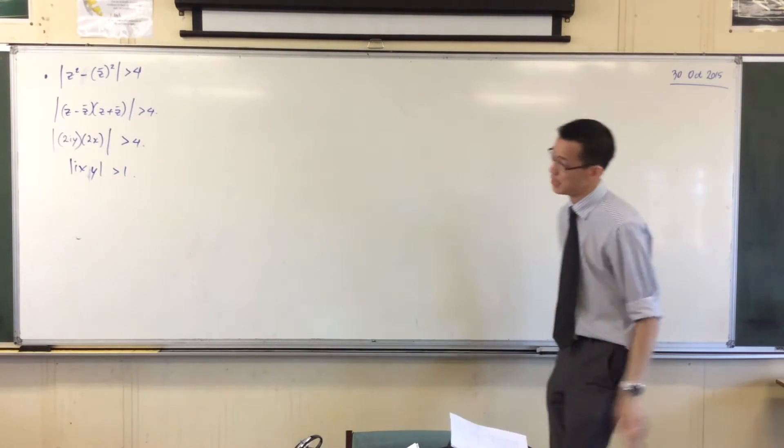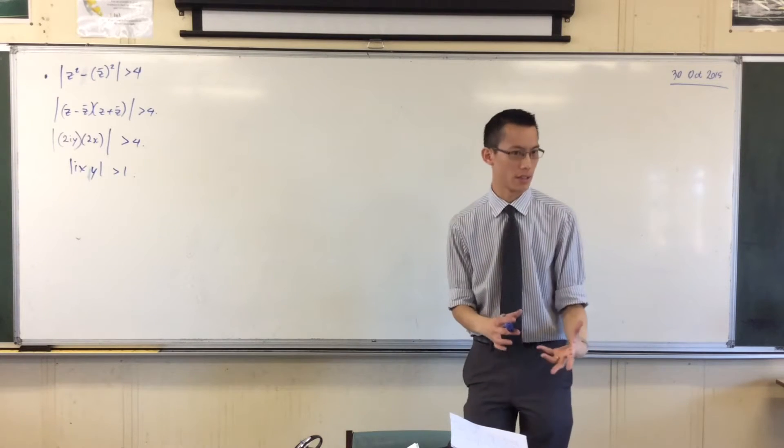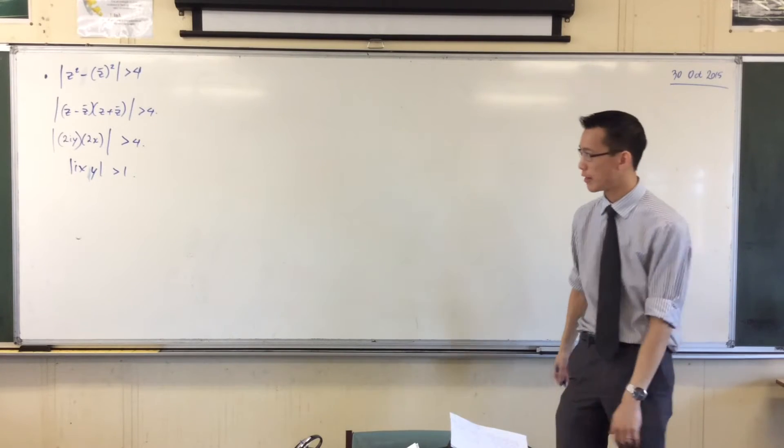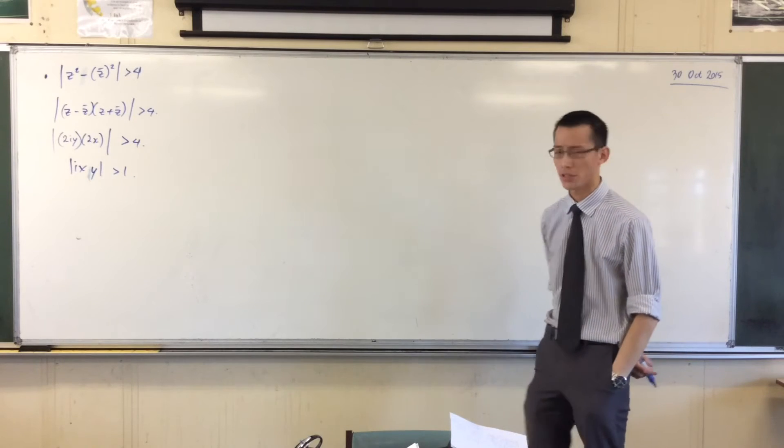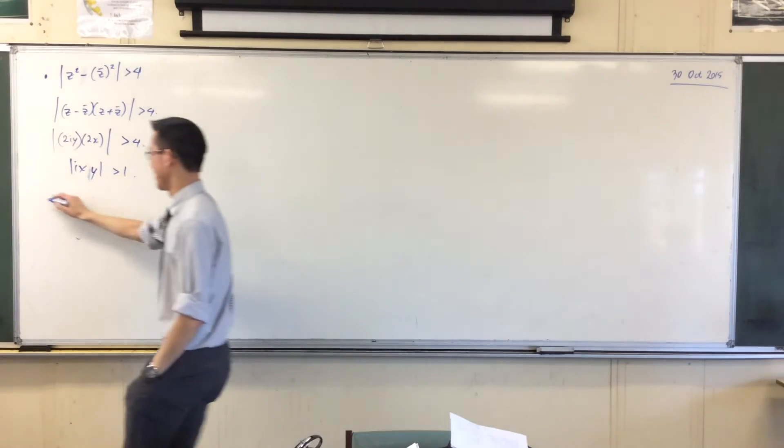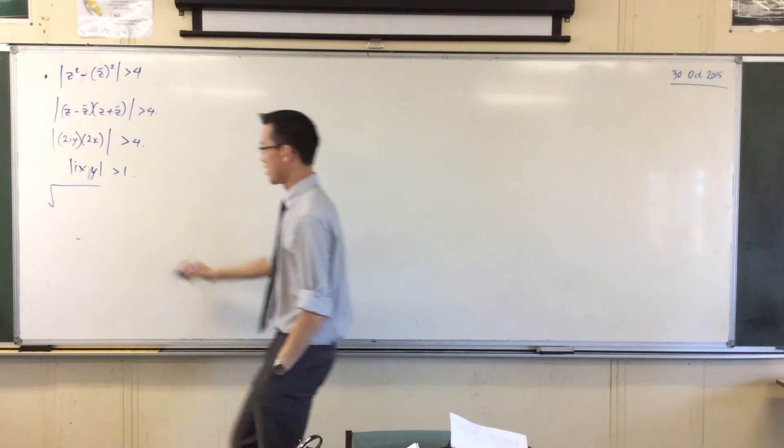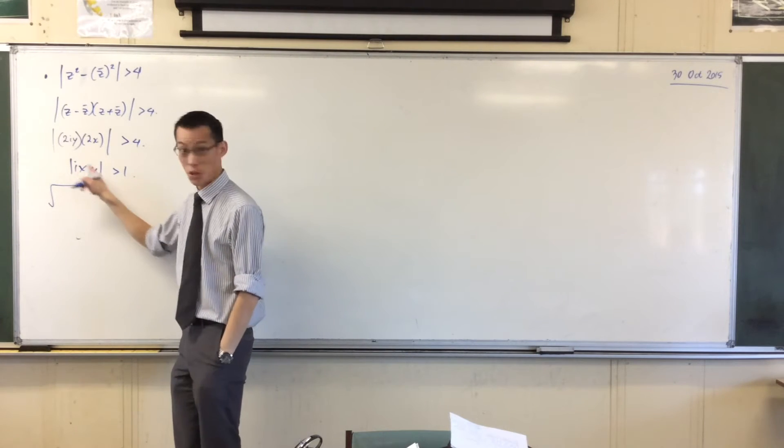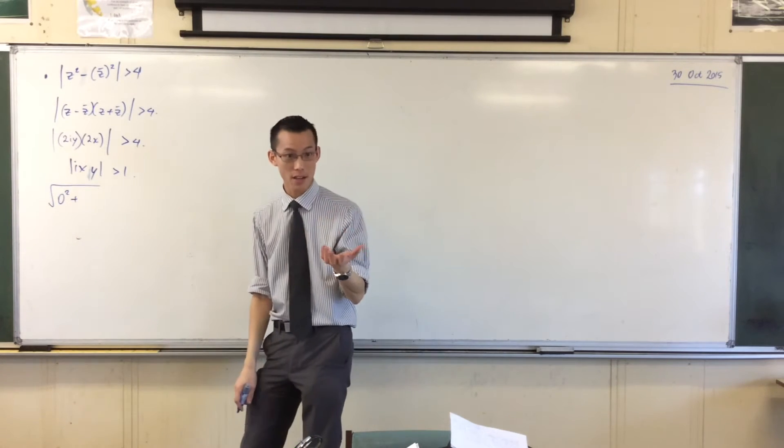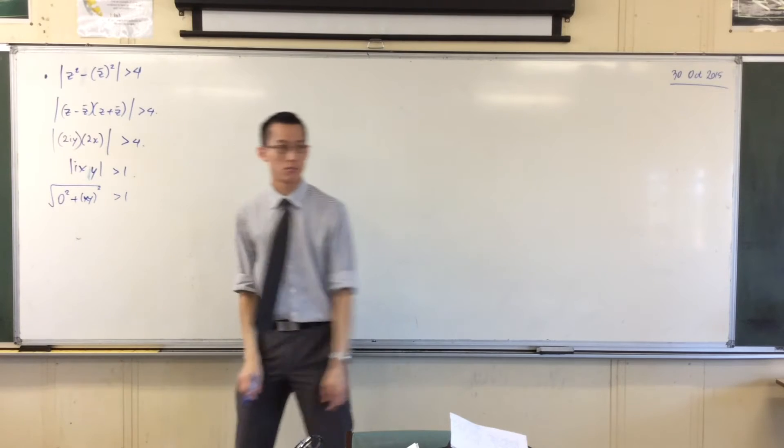Now we've come to the limit of where algebraic simplification can take us, right? Now I want to start getting towards a locus. I want a relationship between X and Y. What a relationship, right? So how do you work out the modulus of this complex number? What's the formula for modulus? I'll give you a hand. Z minus... What is the real part of this? There's no real part. Zero. Plus the imaginary part, which is XY, squared. Greater than 1. Happy with that?